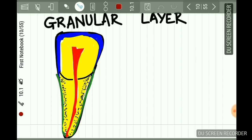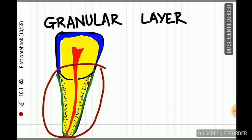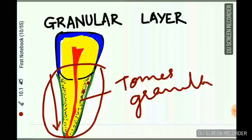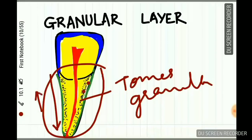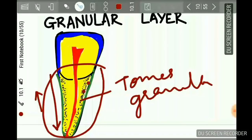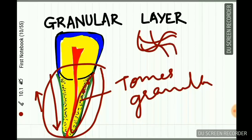The Tomes granular layer is observed when a ground section of a tooth is made and the root portion is examined. A zone adjacent to the cementum appears granular — small granules are seen in root dentine adjacent to the cementum. This is called the Tomes granular layer. As we go from the cemento-enamel junction to the root apex, this layer increases in thickness.